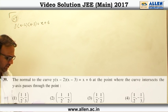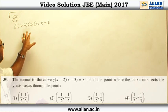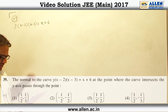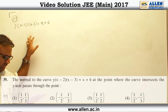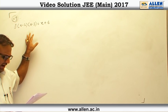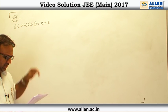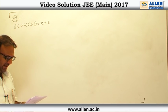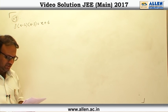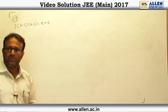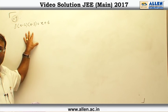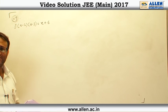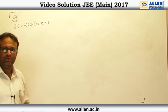In question number 39, we are given this curve and the question says that the normal to the curve at the point where the curve crosses the y-axis passes through which of the following points. So that means we need to find the normal to this curve at x equal to 0.